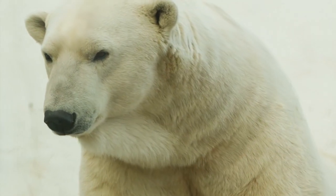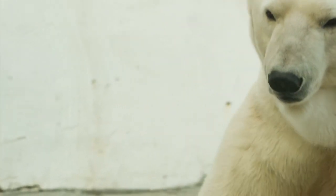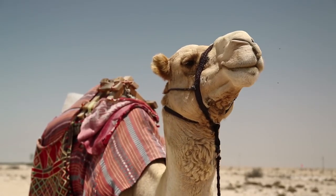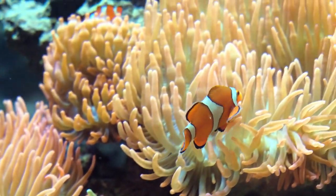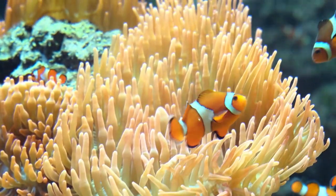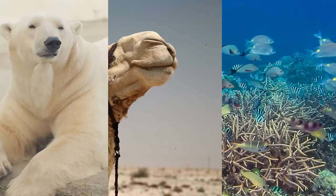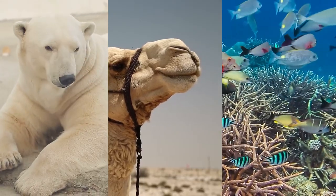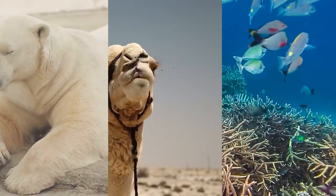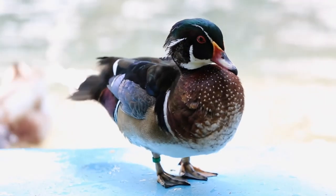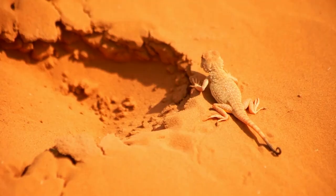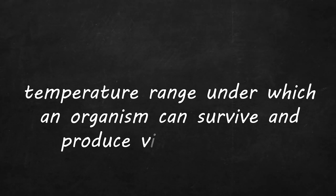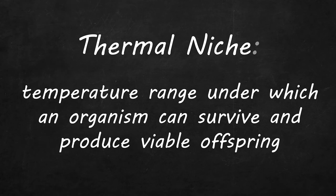If you see a picture of a polar bear, perhaps the first thing that comes to mind is glaciers and ice caps. When you think of a camel you probably picture it living in the desert. When you see a coral reef you likely think of a beautiful warm tropical ocean. Every organism likes to live where it's best adapted to be successful. The conditions under which a species can live and produce viable offspring make up the niche of the organism. An important part of a species' niche is the temperature.